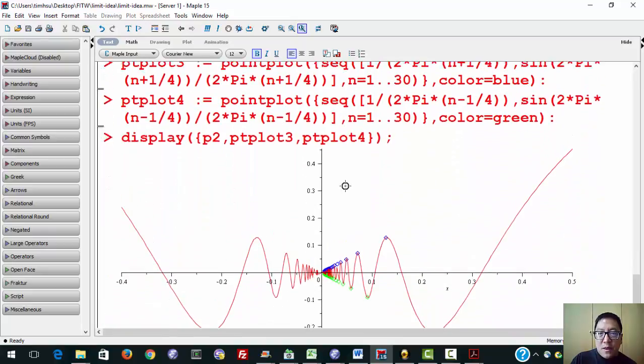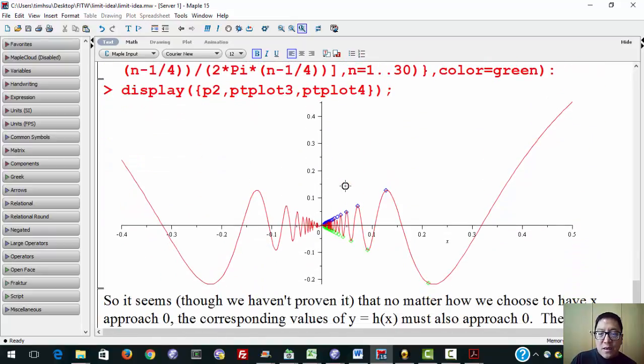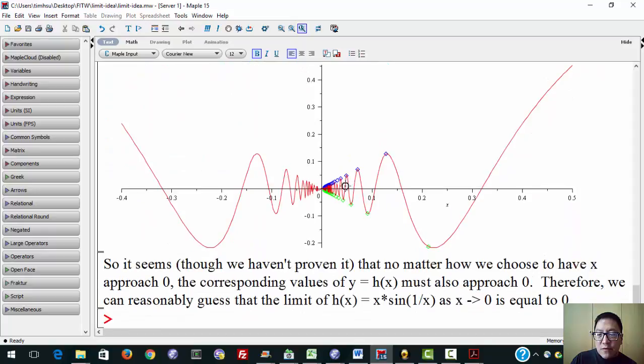On the other hand, if you look at this example, remember that we have this example, h(x) equals x times the sine of 1 over x, and so we see over here that, at least in these two examples, whether we have these blue points here with x approaching 0, or these green points over here with x approaching 0, either way, the corresponding y values do seem to approach 0, and it seems at least, though again we haven't quite gotten this precise, it seems that as x approaches 0, y must approach 0, because that happens no matter how x approaches 0. And so we can reasonably guess that the limit of h(x) equals x times sine of 1 over x, as x approaches 0, is equal to 0.